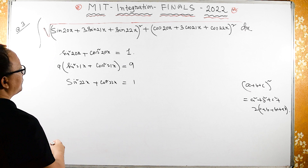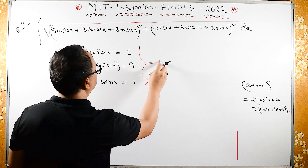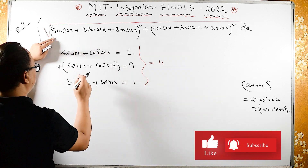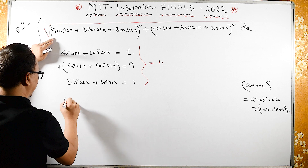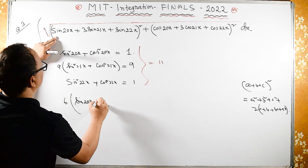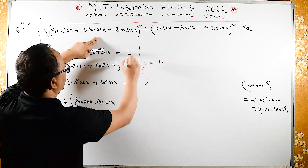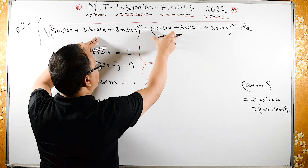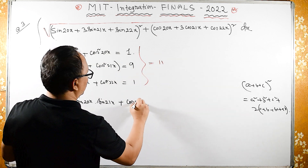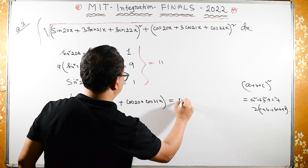So if we add all these we get 1 + 9 + 1 = 11. Now for the cross terms: 2 times 1 times 3 = 6, taken common: sin(20x) times sin(21x), plus 6 times cos(20x) times cos(21x).